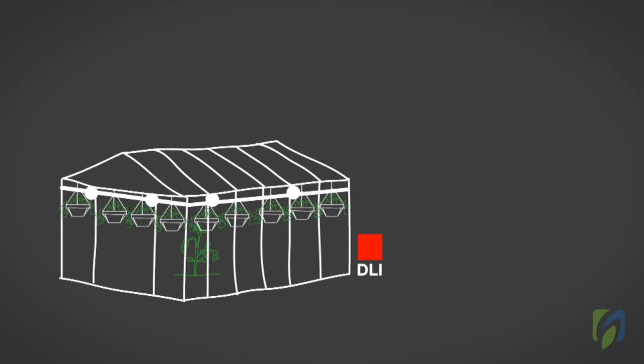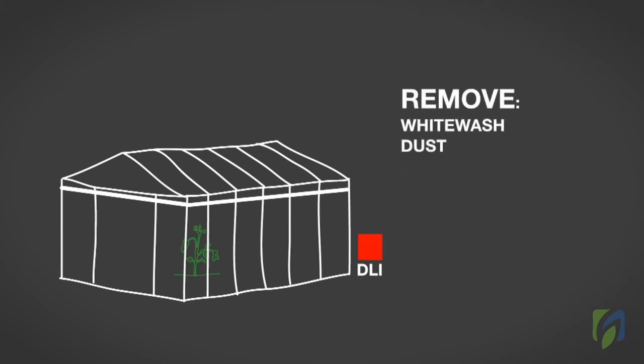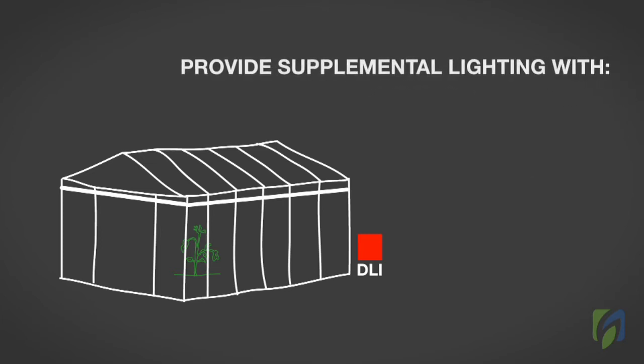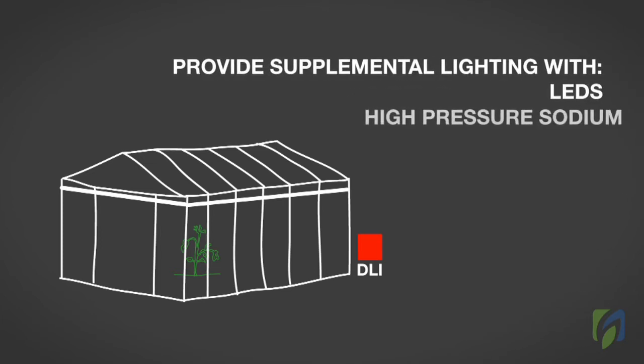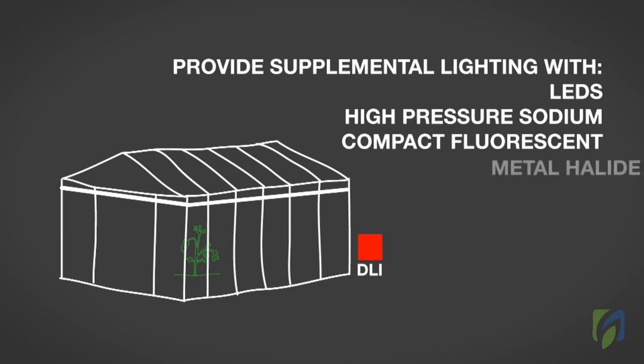There are a number of ways that you can increase the DLI inside of your greenhouse. Eliminate or minimize overhead shading. Ensure that the greenhouse covering is clean by removing whitewash, dust, algae, and condensation. Provide supplemental lighting using greenhouse lamps such as LEDs, high-pressure sodium, compact fluorescent, or metal halide.